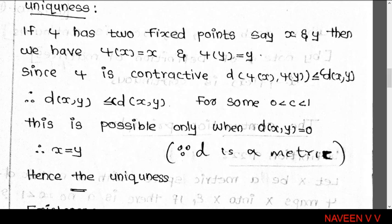To prove uniqueness, assume X has two fixed points. That is, assume φ(x) = x and φ(y) = y, where x and y are points in the metric space X. Then consider d(φ(x), φ(y)) less than or equal to c · d(x, y) for some c in the open interval (0,1).